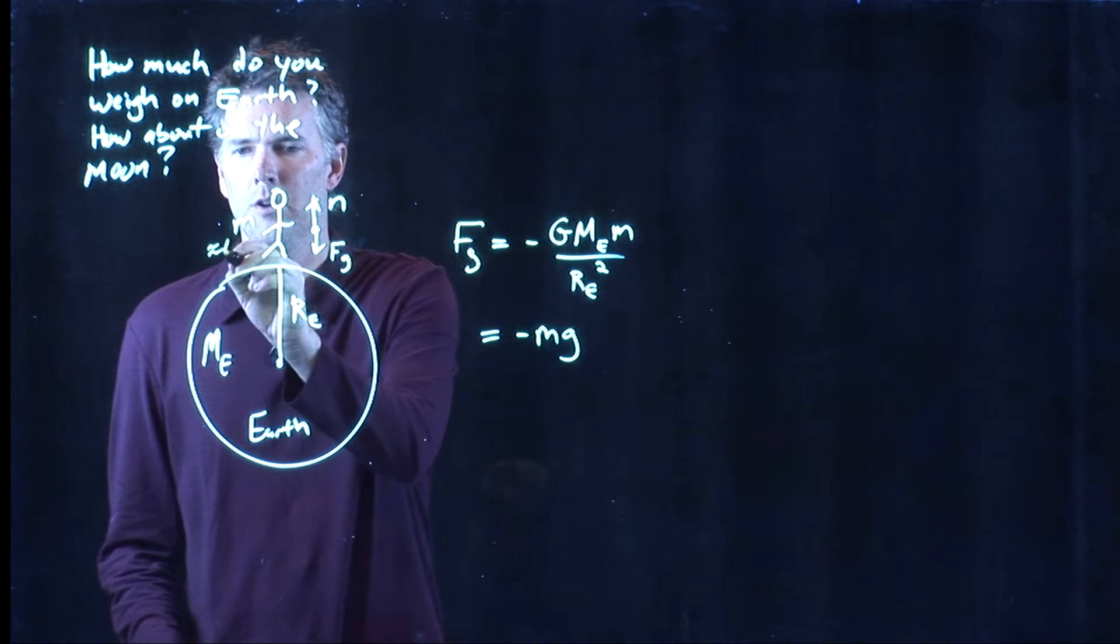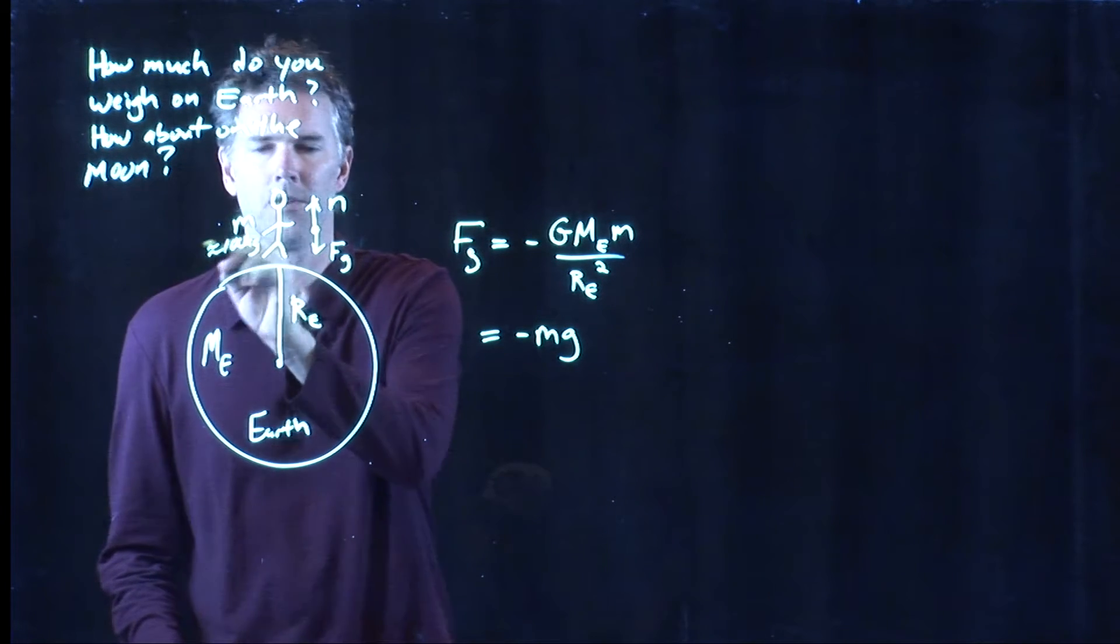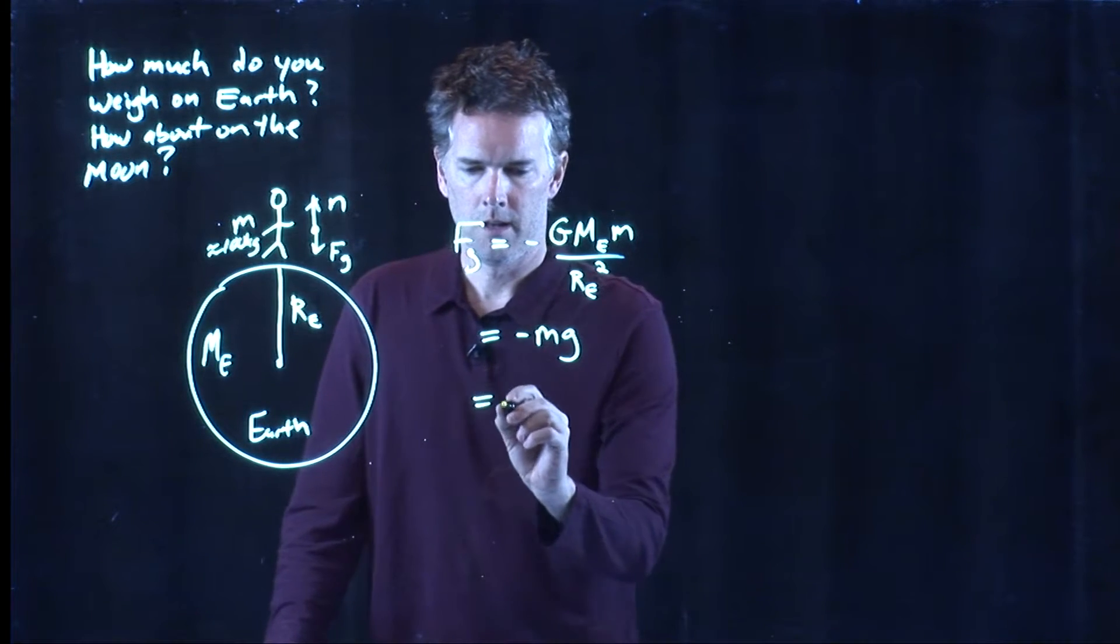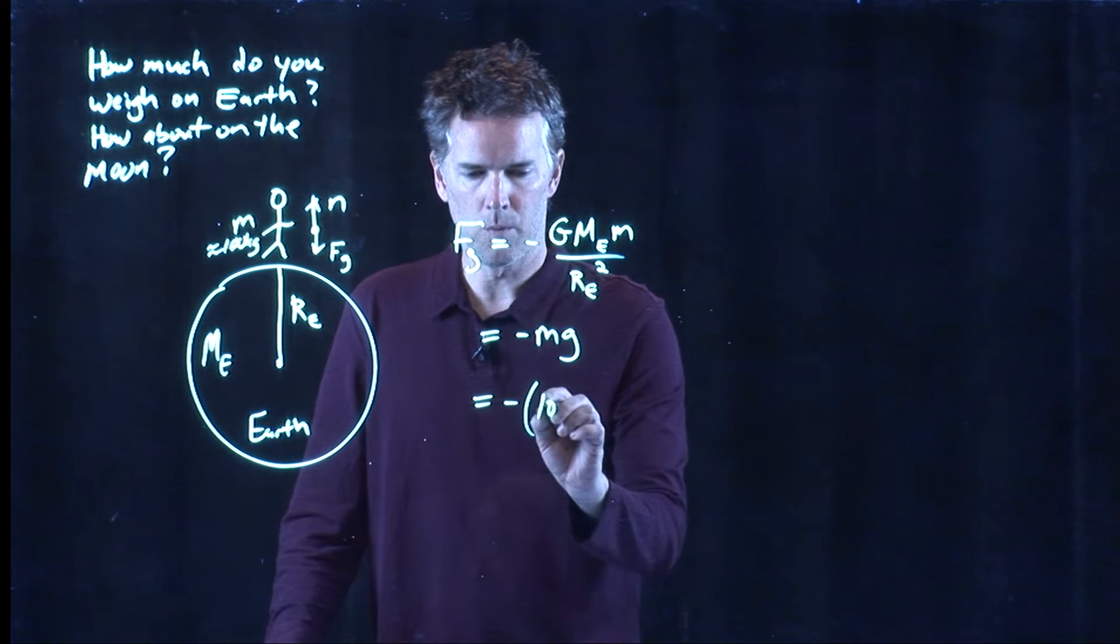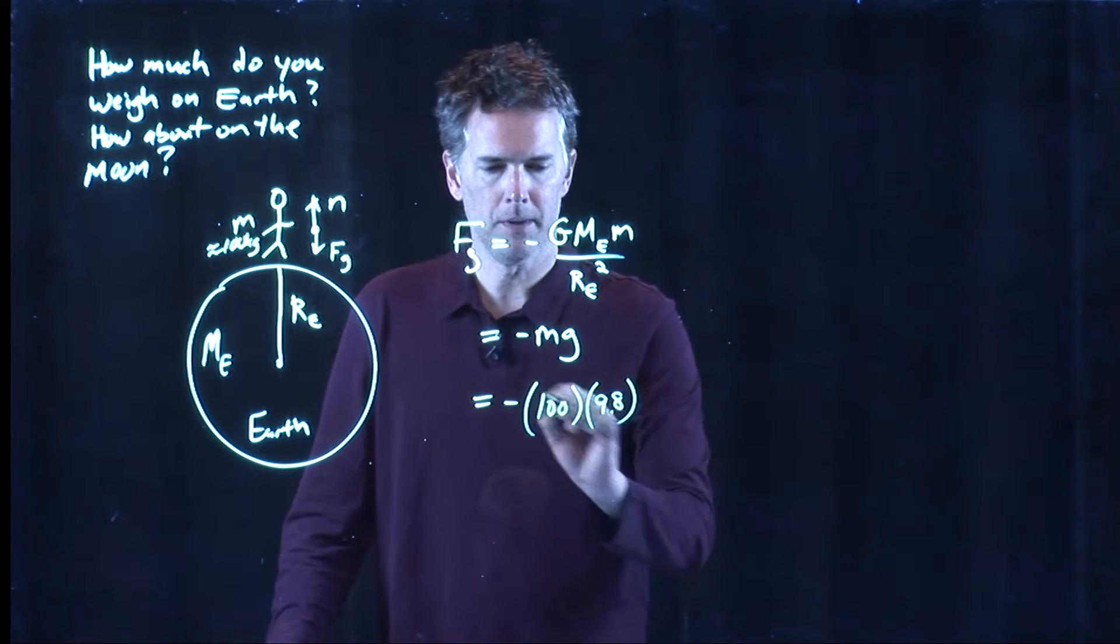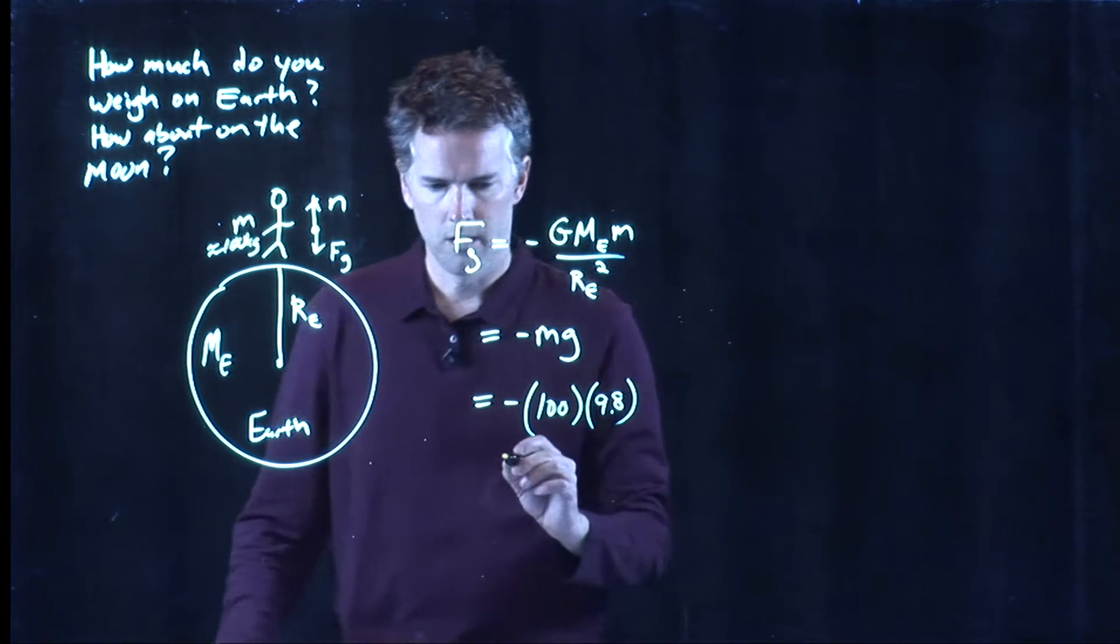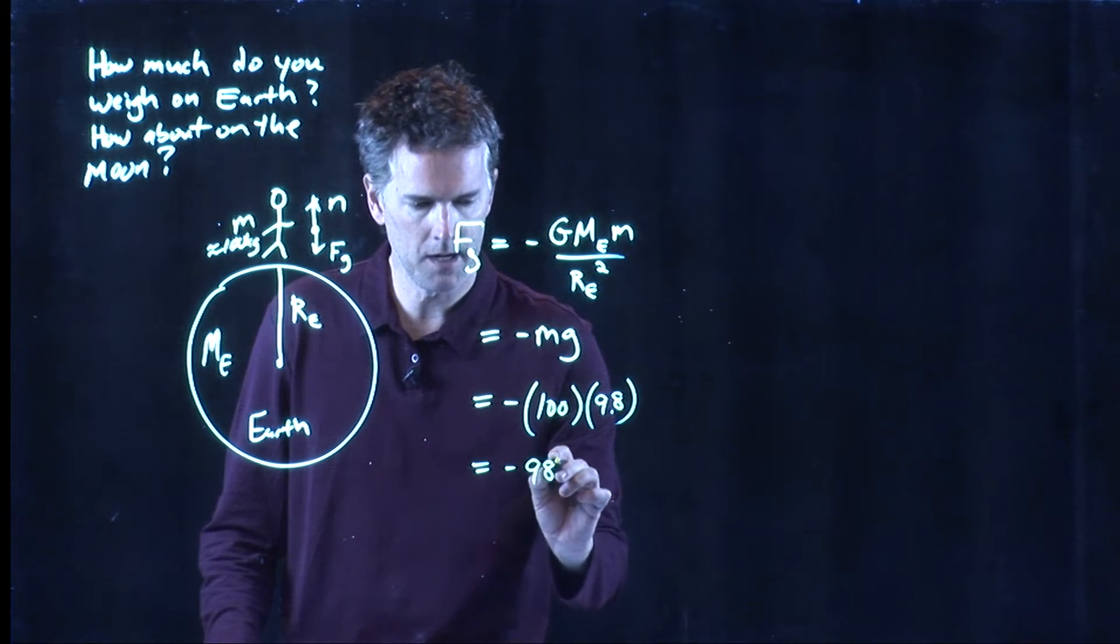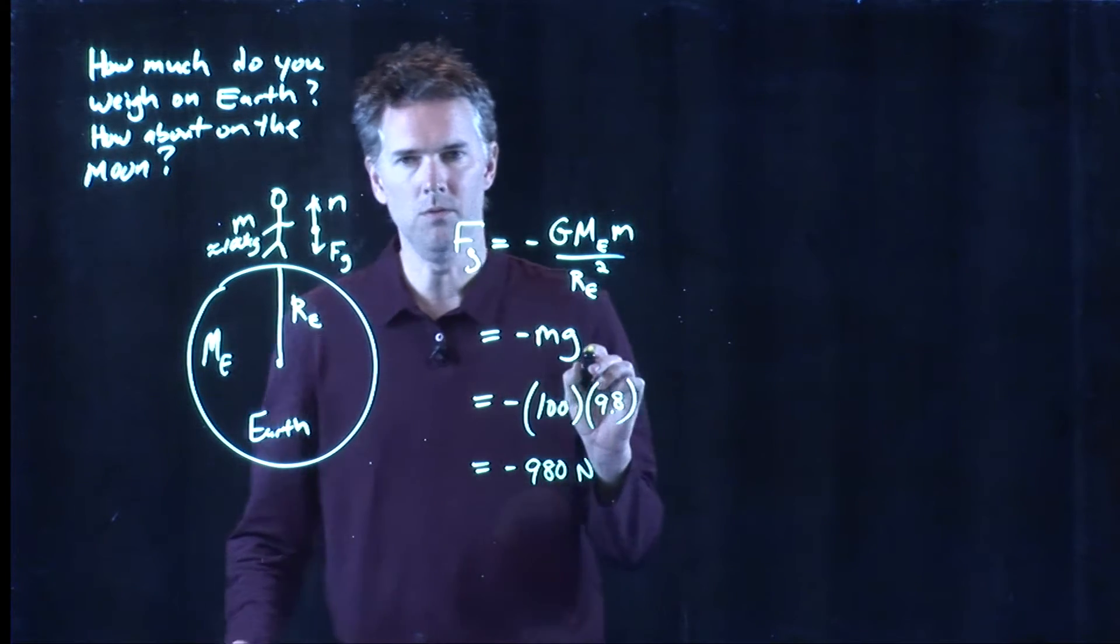So let's say that the mass of you is 100 kilograms. Let's see what this number is then. We get 100 kilograms times 9.8 meters per second squared, all in SI units. We get 980 Newtons.